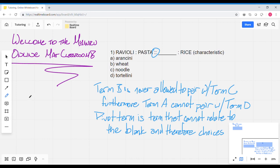So in this case, since the blank is term C, the pivot has to be the one that can't pair with term C, which is of course term B.